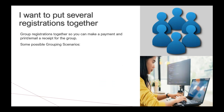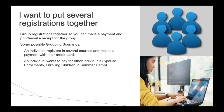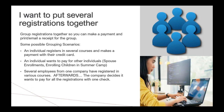Here's another challenge: putting several registrations together in a group. You might want to make one payment for all registrations or print a single receipt or confirmation showing them all. Common cases include: an individual registering in several courses and making a single payment; an individual paying for somebody else — a spouse, business colleague, or parent enrolling multiple children in summer camp; or several employees who registered individually whose company then wants to pay for all of them with one check.